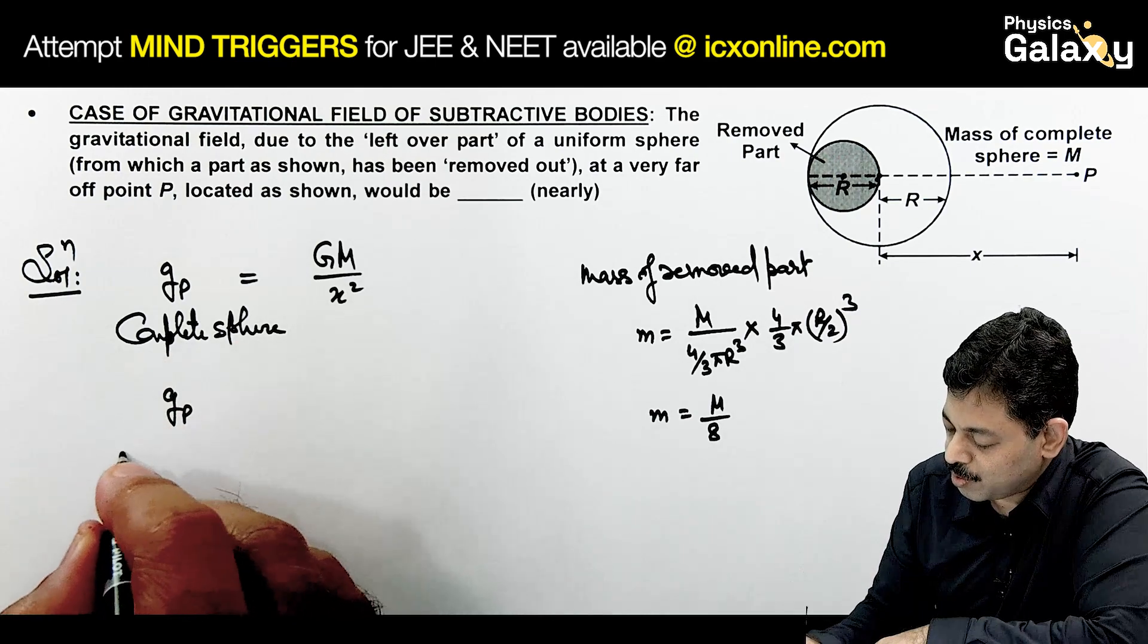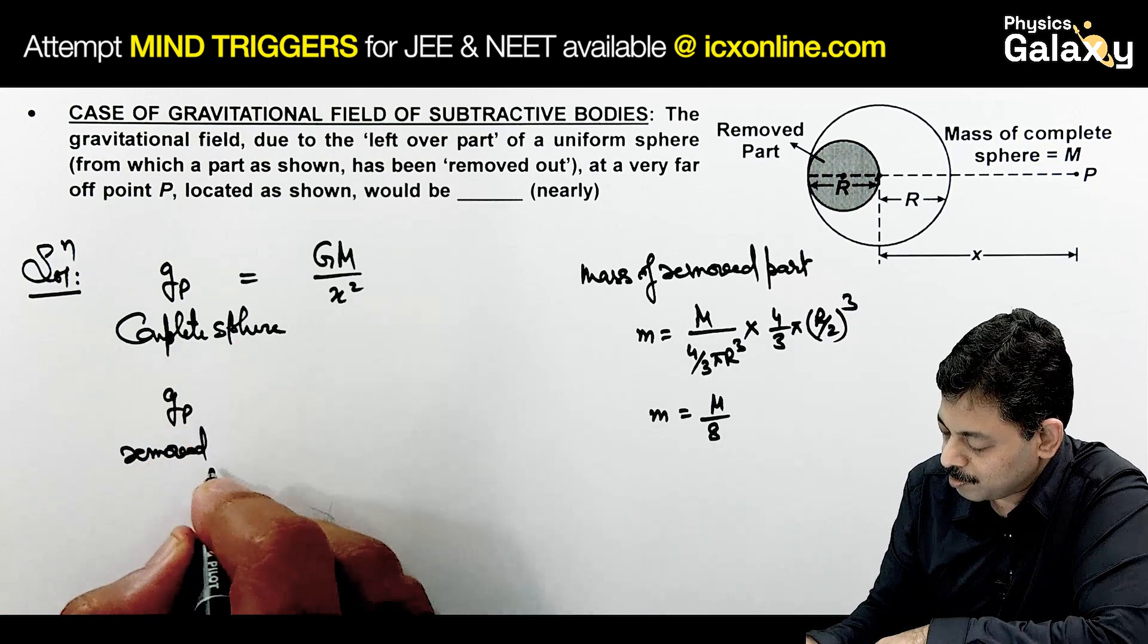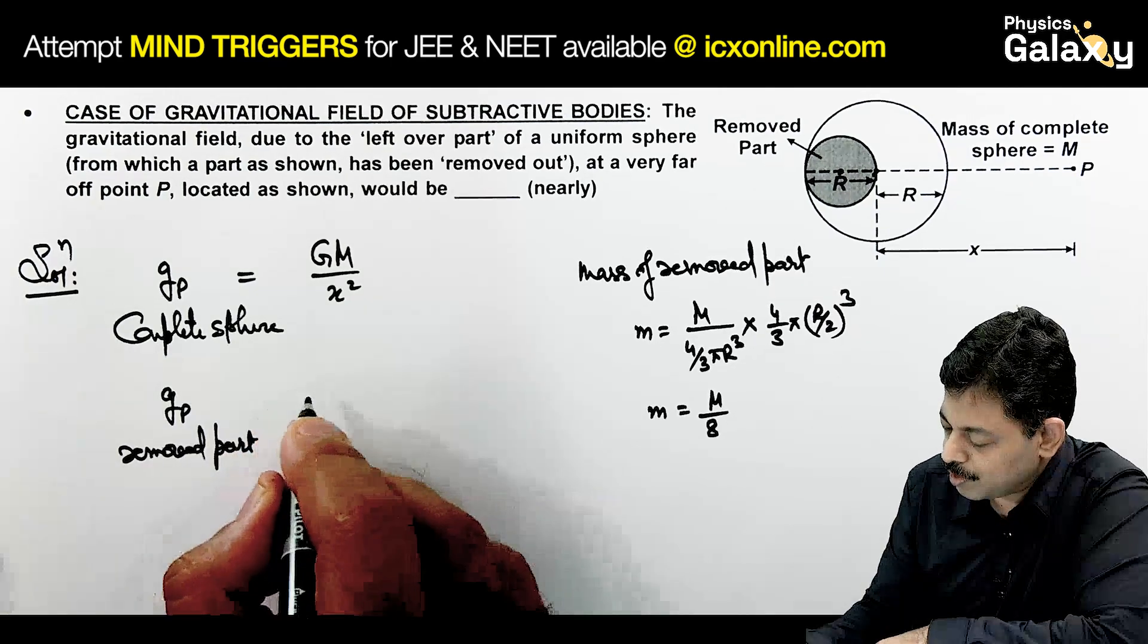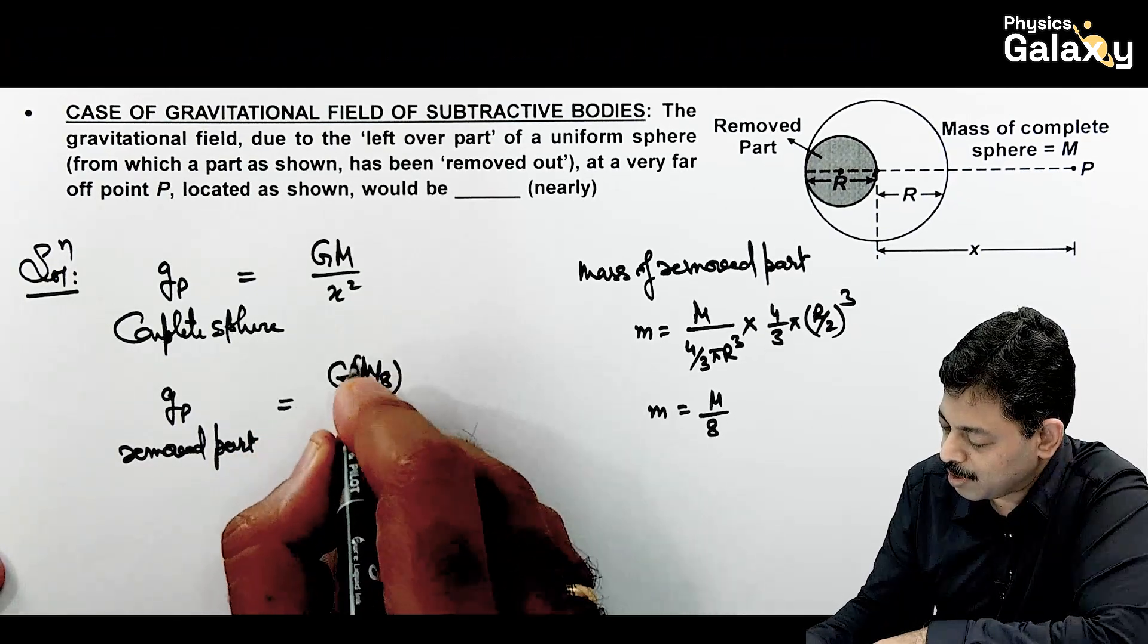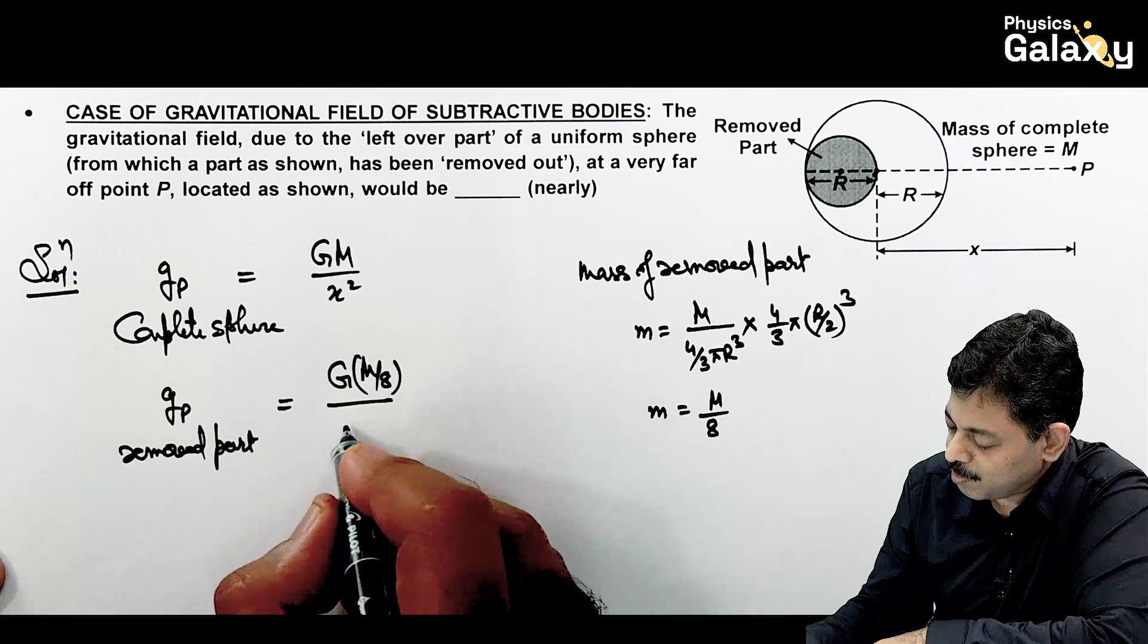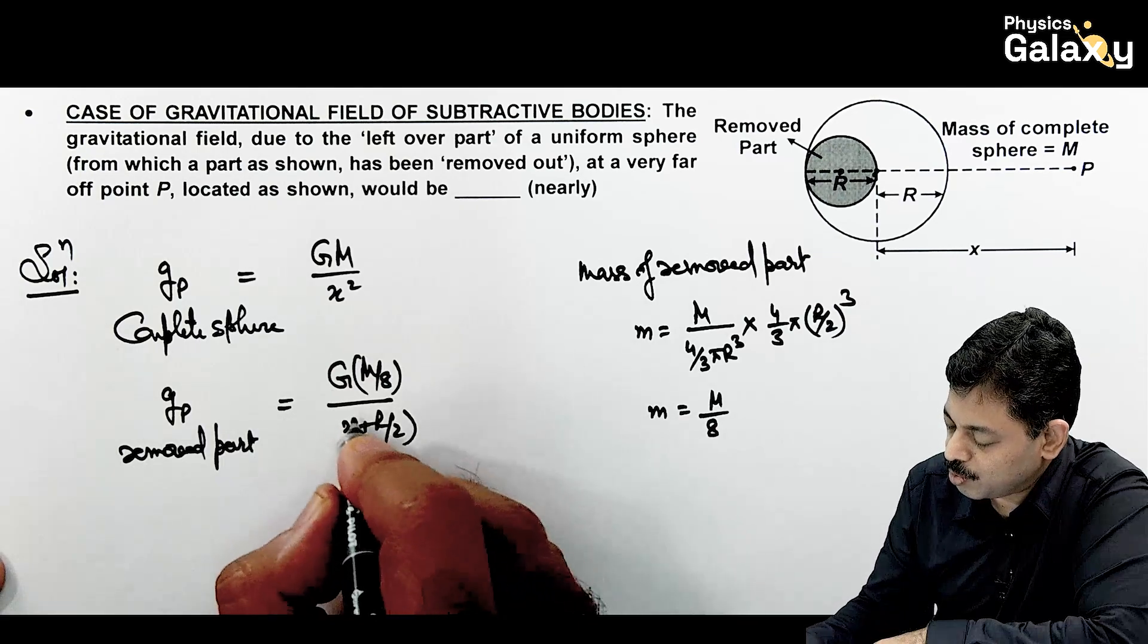So we can say g at point P, due to the removed part, can be written as G, mass becomes M by 8, divided by the distance which will be X plus R by 2 whole squared.